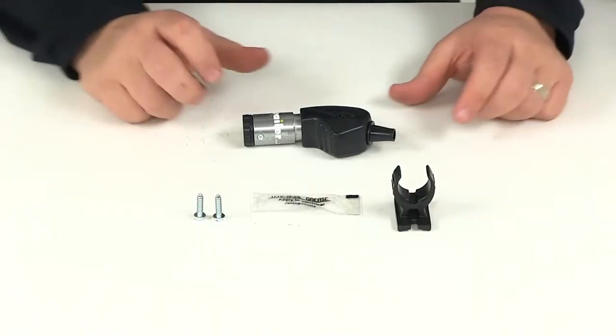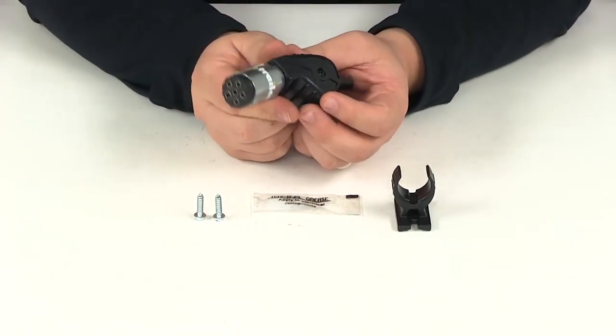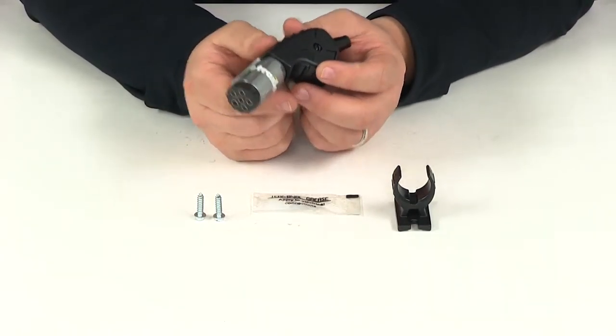Today we're going to be taking a look at part number HM48440. This is the Hopkins Endurance six-way round trailer connector for the trailer end.